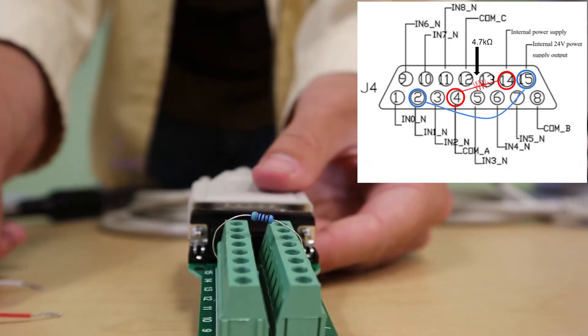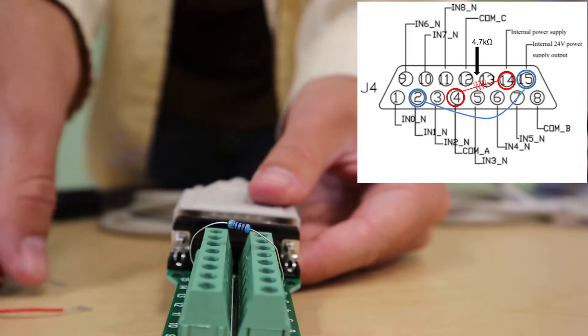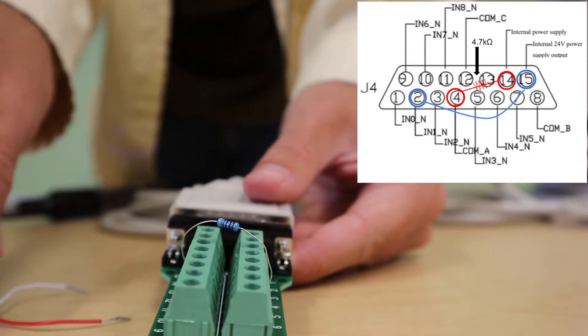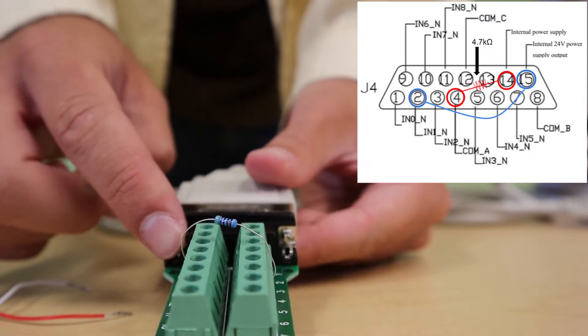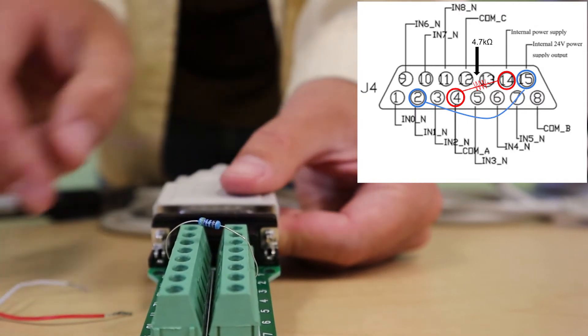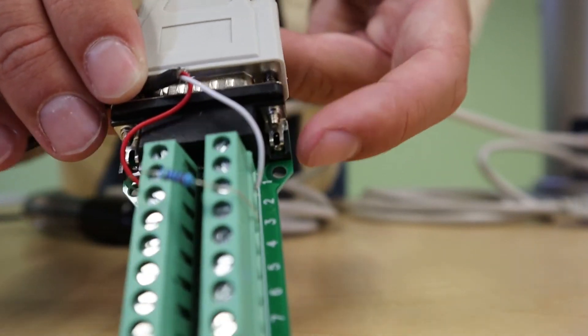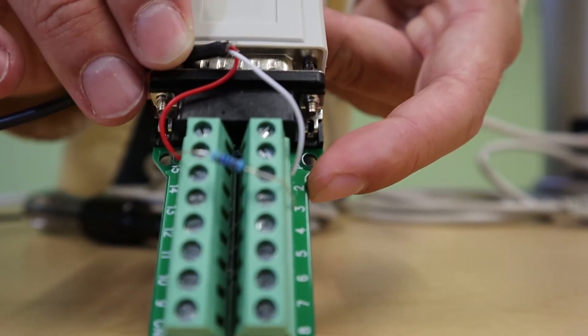To receive the input signal, in this case a screw feeder, we'll have to connect pin 15, the internal 24 volt power supply pin, to our input of choice. Here I've connected to pin 2 which relates to input 1.